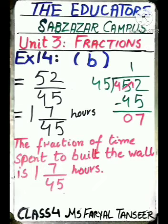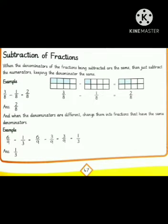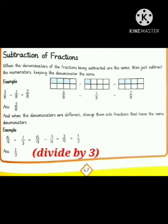Page 47: subtraction of fractions. When the denominators of the fractions being subtracted are the same, just subtract the numerators keeping the denominator the same. For example: 3/8 − 1/8 = 2/8. When the denominators are different, change them into fractions with the same denominator using the LCM method. For example: 6/9 − 1/3 — since 3 divides into 9 — becomes 6/9 − 3/9 = 3/9, which in lowest form is 1/3.